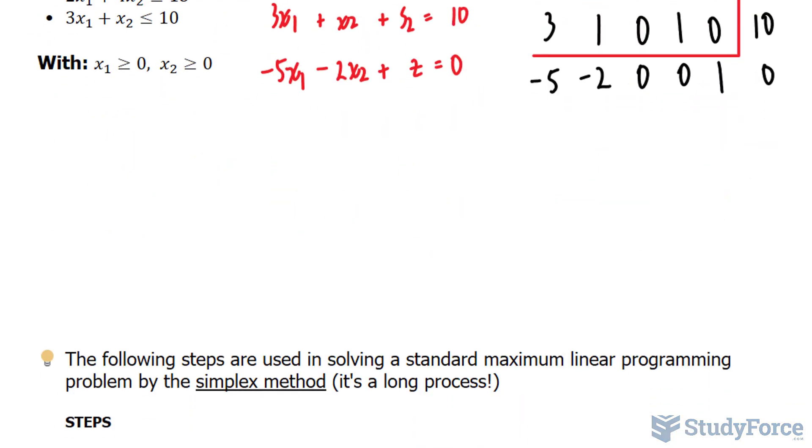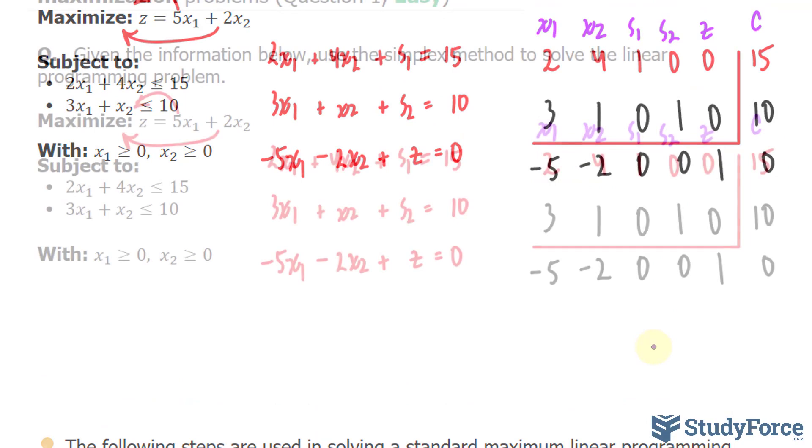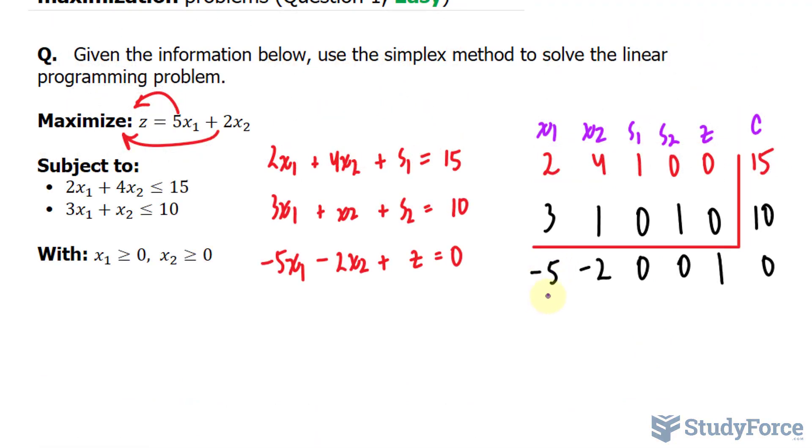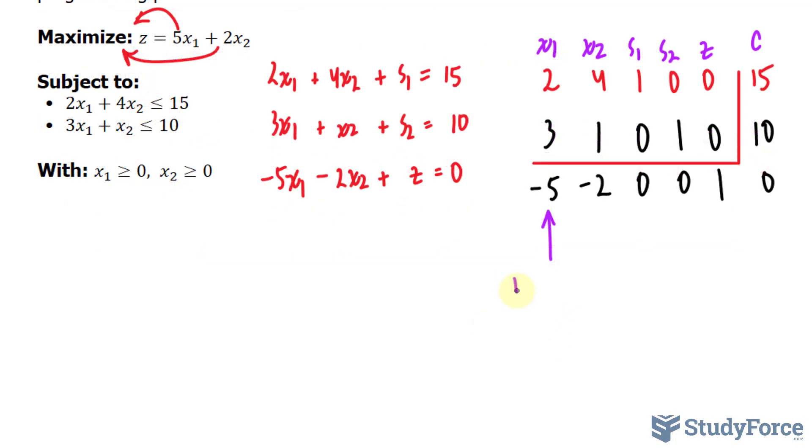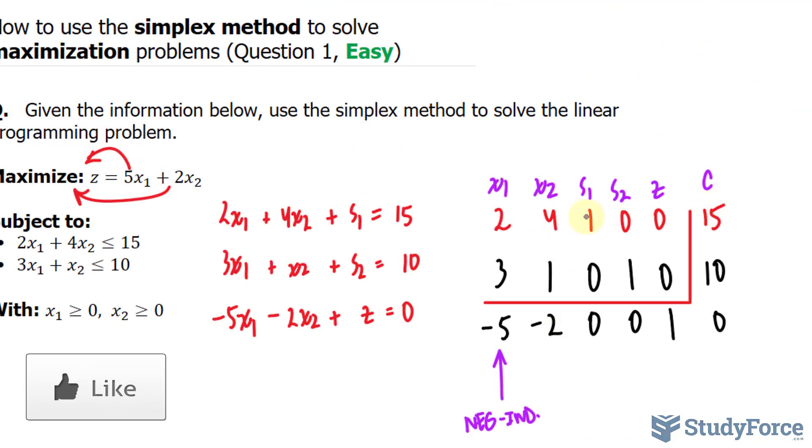At this point, you want to analyze which of these numbers in this equation is the most negative. Notice that negative 5 is the most negative, so we'll call negative 5 our indicator. Let's write down negative indicator.